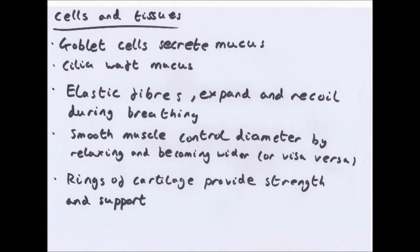There are a number of cells and tissues involved in the respiratory system. Goblet cells secrete mucus and work with the ciliated epithelium. The cilia waft the mucus, which traps bacteria, dust, and anything you don't want getting into your lungs, and wafts it to the back of your throat where you swallow and digest it, getting rid of anything harmful.